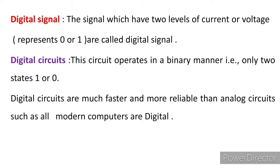Digital circuits operate in a binary manner — that is, only two states: 1 or 0, which is a binary digit. Digital circuits are much faster and more reliable than analog circuits, and all modern computers are digital.